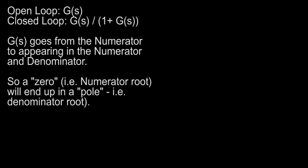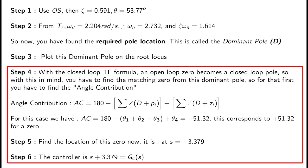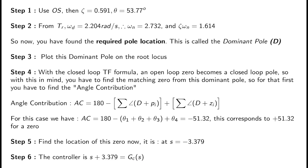Now, when you have an open loop transfer function and you close the loop — G(s) over (1 plus G(s)) — any zeros in G(s) move to the denominator, becoming poles. The root locus method takes this into account. You need to find something called the angle contribution to locate a matching zero for this dominant pole. The angle contribution is 180 degrees minus the sum of all angles the dominant pole makes with the other poles, plus all the angles it makes with the other zeros.